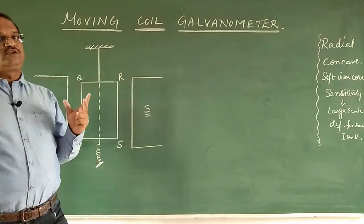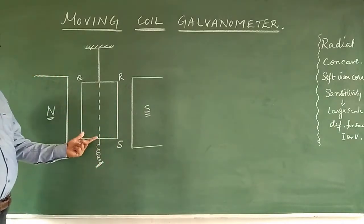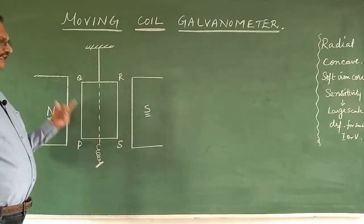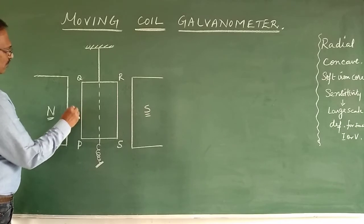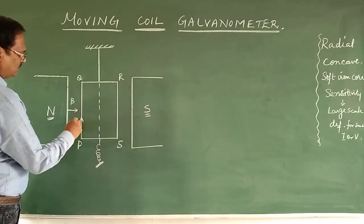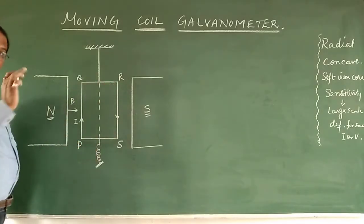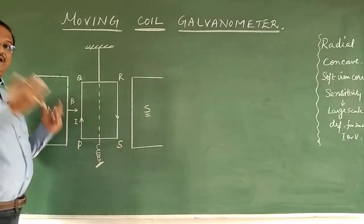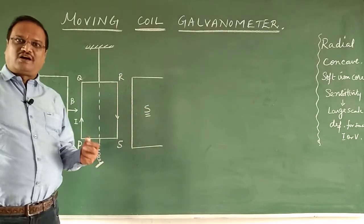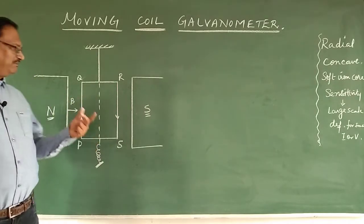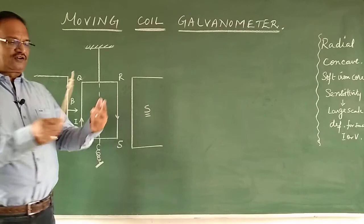We already studied that when you place a rectangular coil — or any coil-shaped coil — in a magnetic field, it experiences a torque. The magnetic field B is present, and a current I is flowing through it. The arms are PQRS, where arms PQ and RS experience a force, but QR and PS are anti-parallel, so they do not experience a net force.